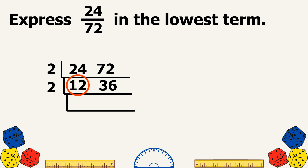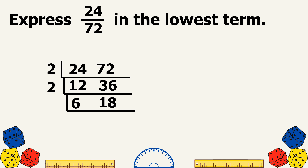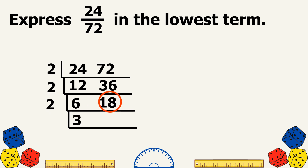Let's continue dividing: 12 divided by 2 equals 6, and 36 divided by 2 equals 18. Now, 6 and 18 can still be divided by 2, so let's divide continuously: 6 divided by 2 equals 3, and 18 divided by 2 equals 9. Now, 3 and 9 can still be divided by a common prime factor, which is 3.